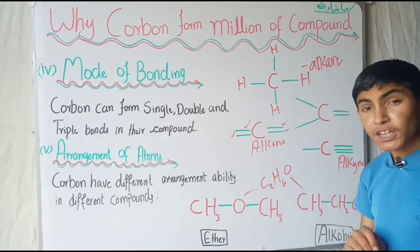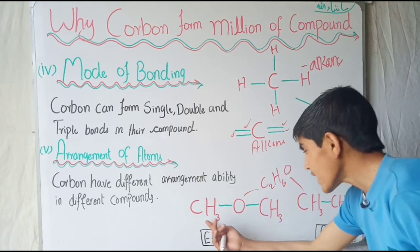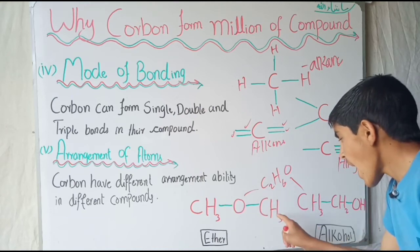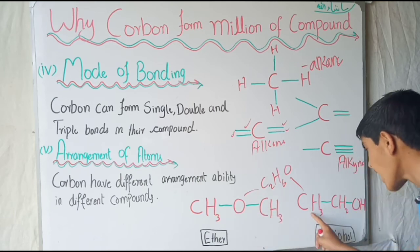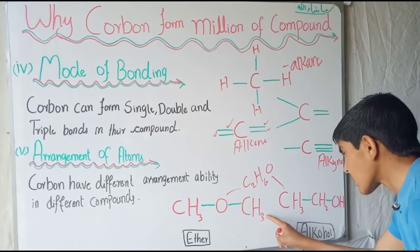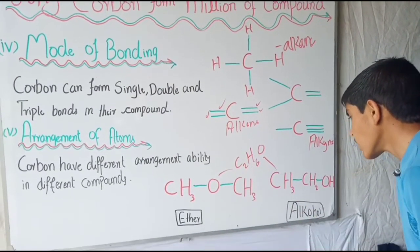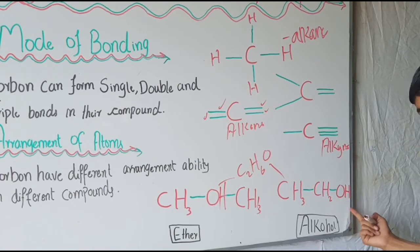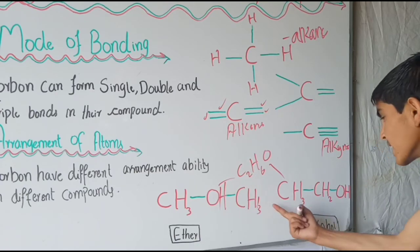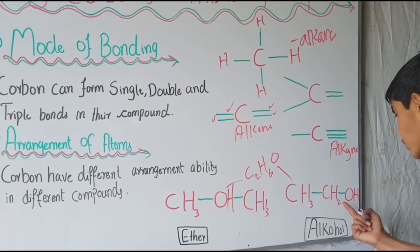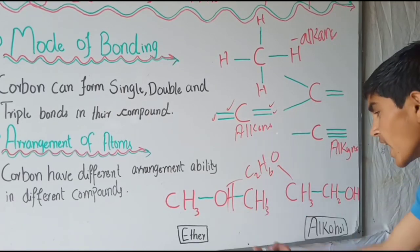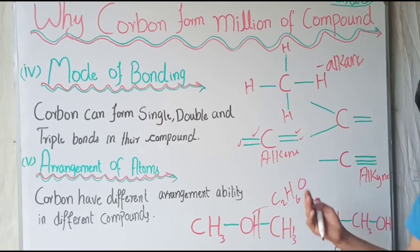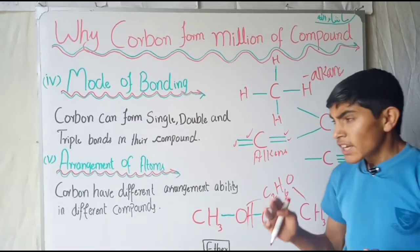Ether and alcohol both have different chemical properties — not only physical but also chemical properties — due to the arrangement of carbon atoms. You can see that in ether, oxygen is in between the two CH3 groups, making C2H6O. In alcohol, one CH3 group goes to the center, giving one hydrogen to the oxygen and making a hydroxide group. Due to this different arrangement of carbon atoms, the chemical properties of these organic compounds also change.